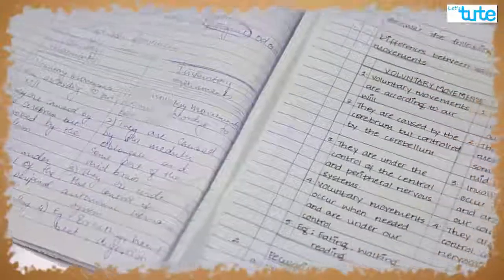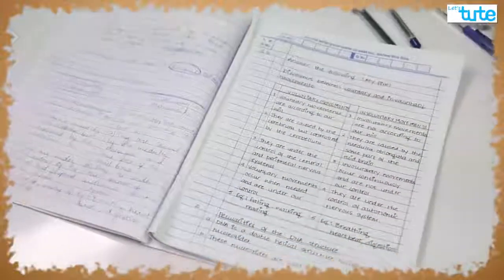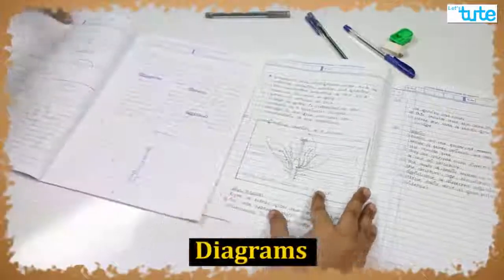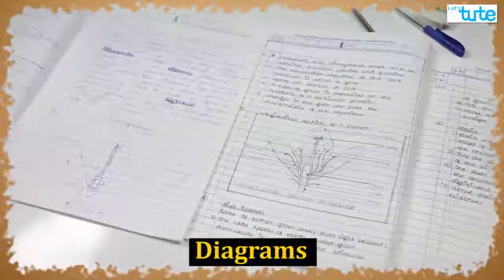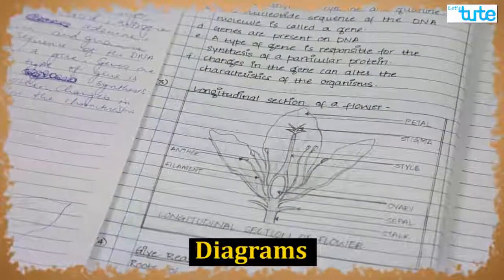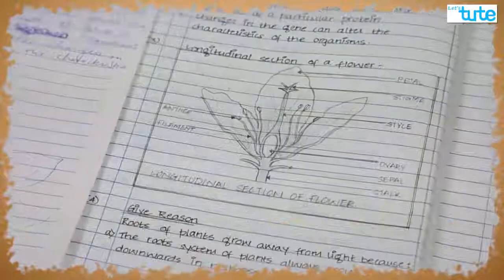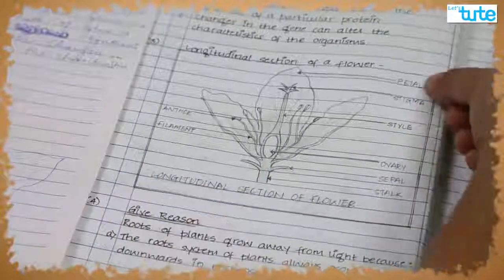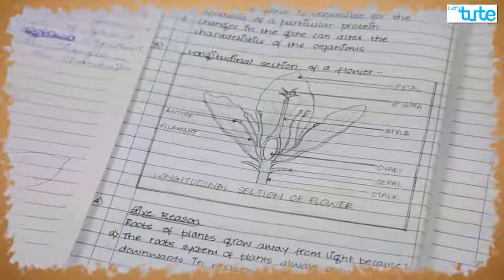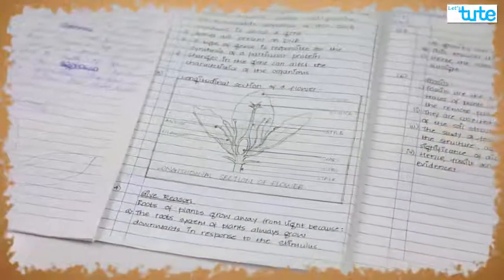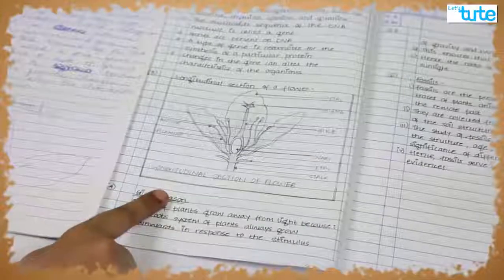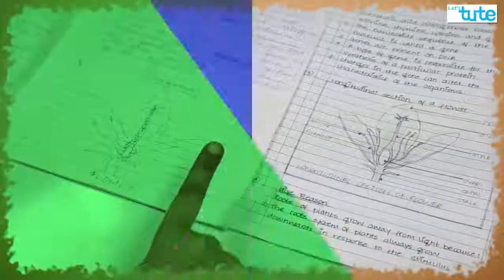In the subject of science, diagrams are very important, right? You must draw neat diagrams using pencil only. Also, giving a proper title and labeling the parts is very important. You can put them in boxes like this to make it even more better.